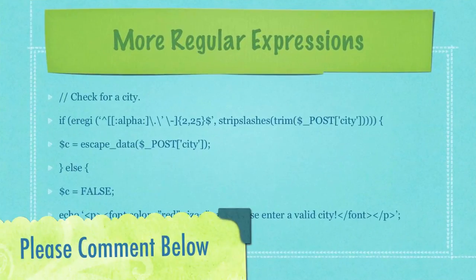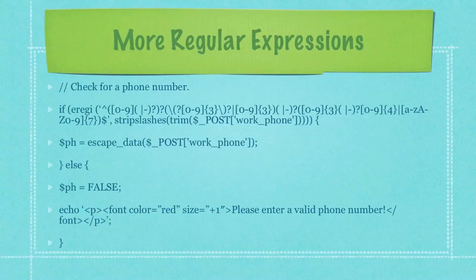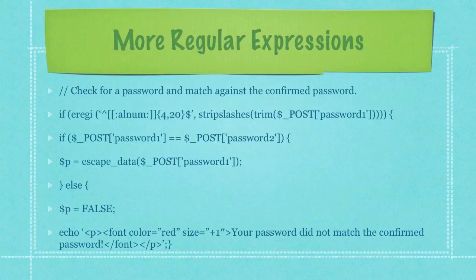Here we're checking if a valid city has been entered. Checking for a valid zip code. Checking for a valid phone number. Here you can see an example of a more complicated regular expression — I explain exactly character for character what this does in the regular expressions tutorial. Here we're checking for a password and matching it against the confirmed password.